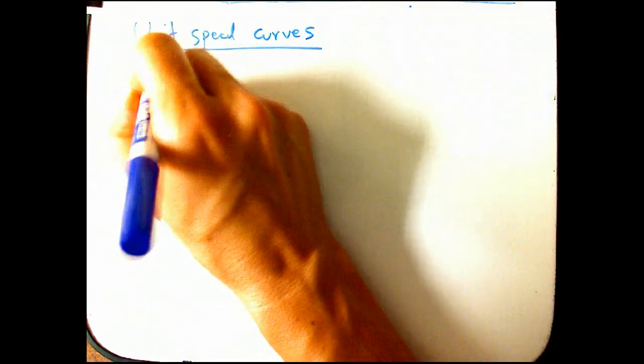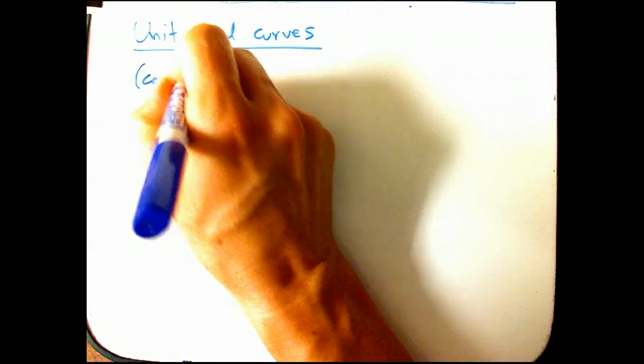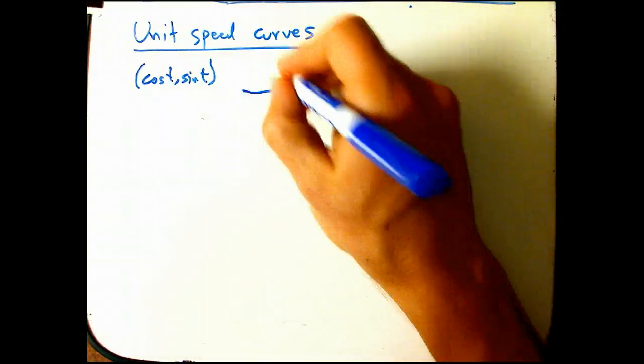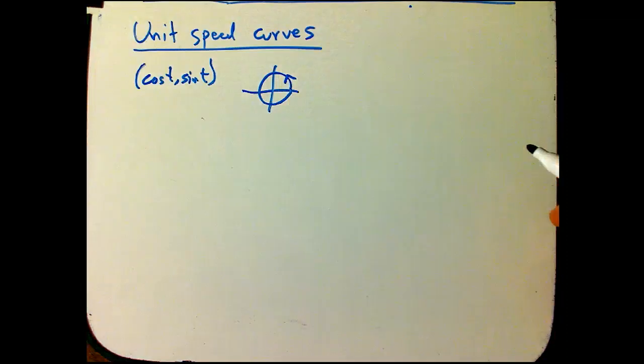So our favorite example of a unit speed curve that's not just going along a straight line or something is the unit circle parameterized in the usual way, cosine t, sine t.